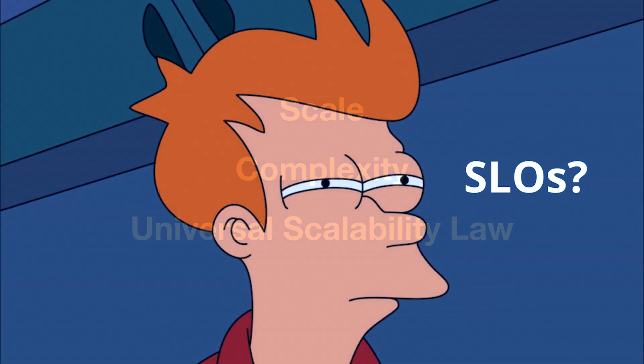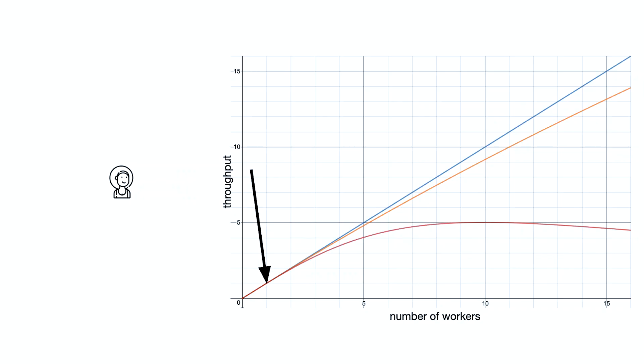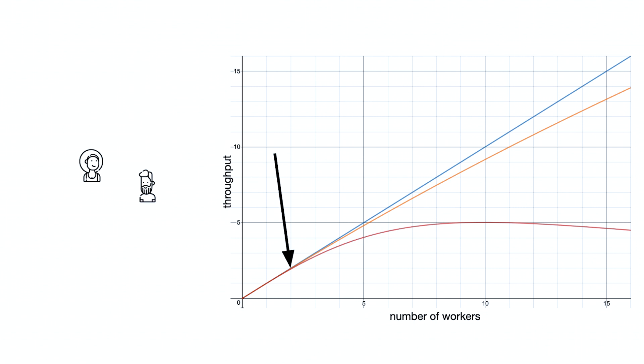Isn't this supposed to be about SLOs? So here we go. Let's build an organization as if scalability, complexity, and the universal scalability law mattered, and see where SLOs fit in. We'll start with a solo contributor. The scale we're working at is person scale — single people. The complexity is contained within one mind, contention is limited to one person doing the work, and coherence is at maximum.